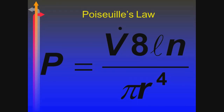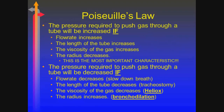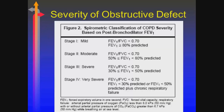Poiseuille's Law talks about flow rates. We know the radius is the most important component. Anything in the denominator — as that goes smaller, the pressure required to ventilate goes up. The same is true with things in the numerator. If you want a faster flow, you've got to generate a higher pressure to get there. The radius of the tube is the most important factor.